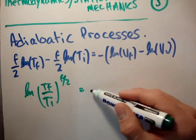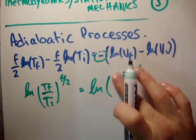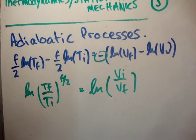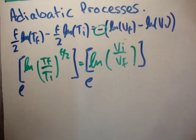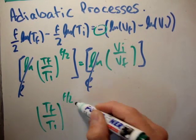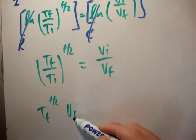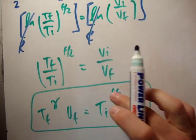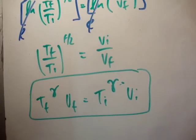Finally, rearranging, T_f^(f/2) · V_f = T_i^(f/2) · V_i. We call f/2 the placeholder exponent gamma — the adiabatic exponent. So T^γ · V = constant. This formula only applies to adiabatic processes where Q equals zero and only compression work is done. However, it's not in the most commonly used form in thermodynamics, so I want to convert it to the form pV^γ = constant.